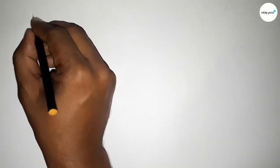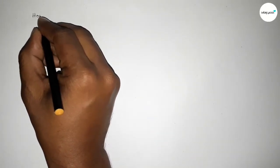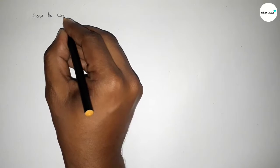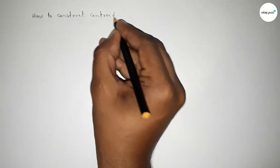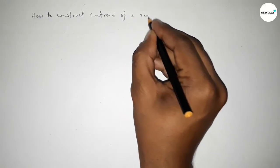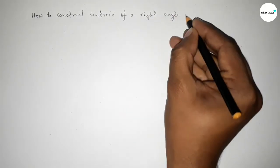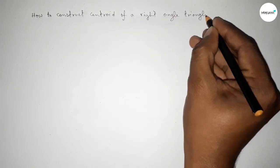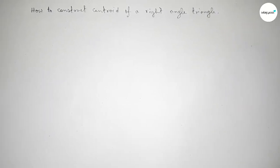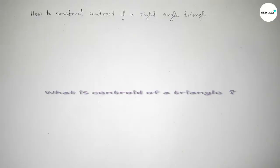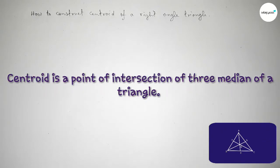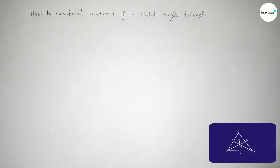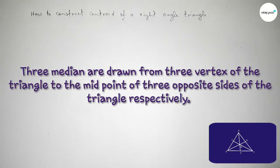Hi everyone, welcome to SSR Classes. Today in this video we have to construct the centroid of a right angle triangle by using compass in an easy way. So let's start the video. First of all, talking about what is the centroid of a triangle — centroid is a point of intersection of three medians of a triangle.